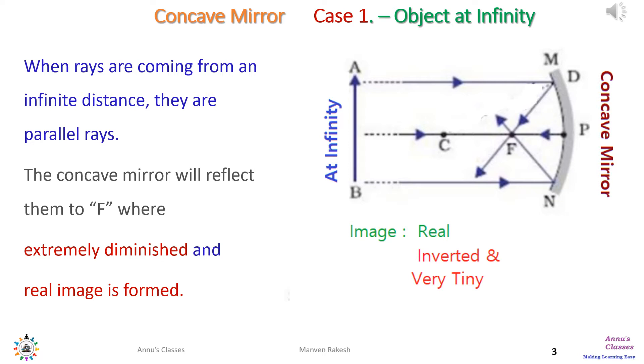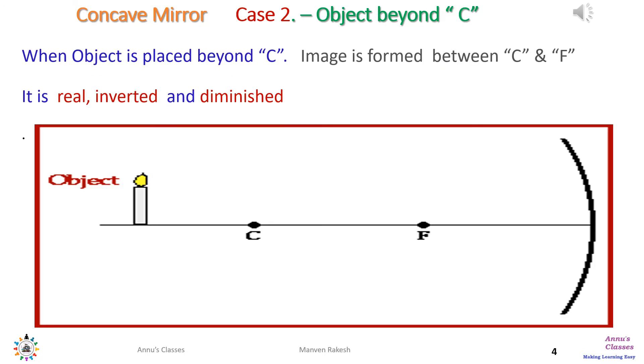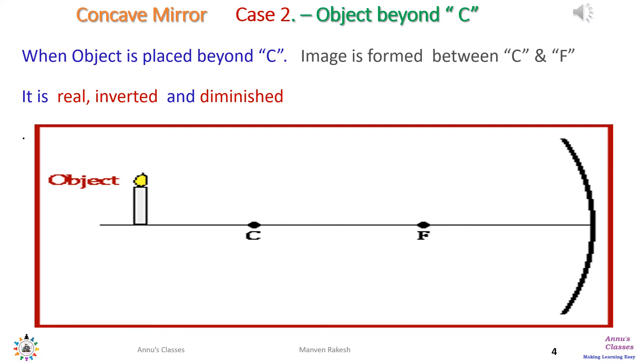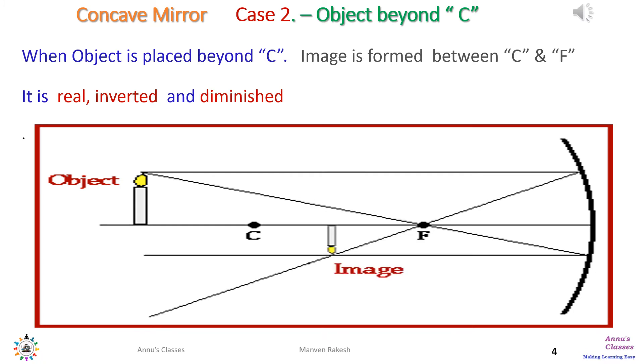In the second case, we bring the object slightly close from infinity but beyond C, the center of curvature. Two rays from the object: one going parallel to the principal axis rebounds back passing through F; the other passing through F first rebounds as parallel to the principal axis. The image formed is real, inverted and diminished.